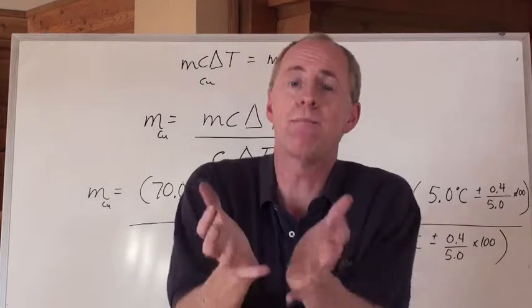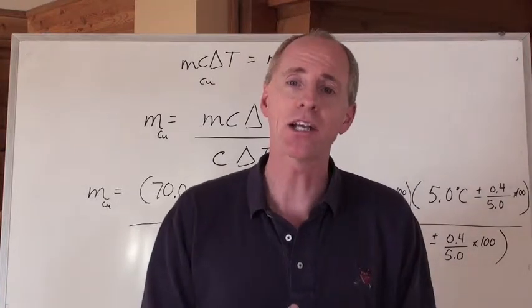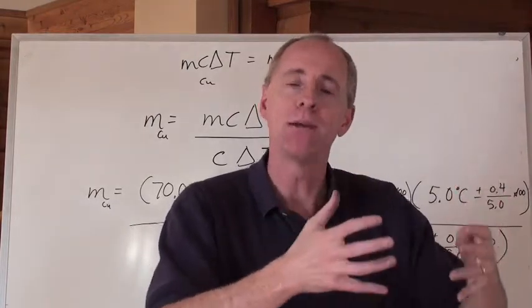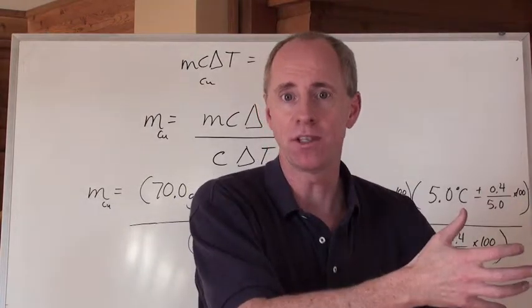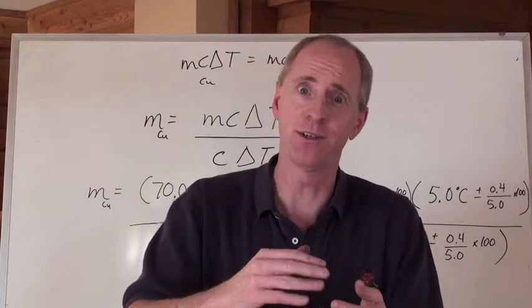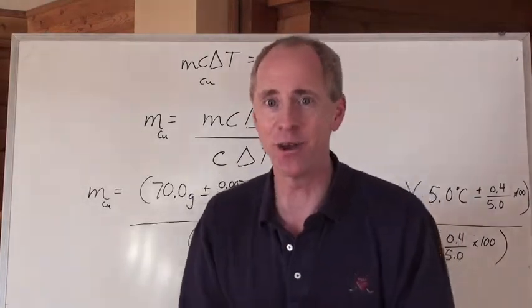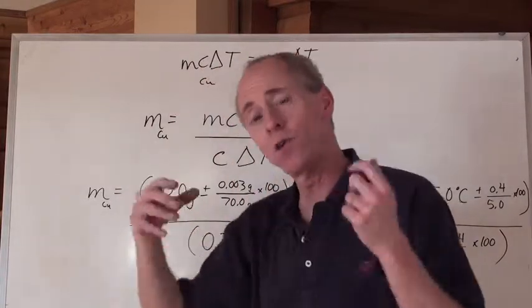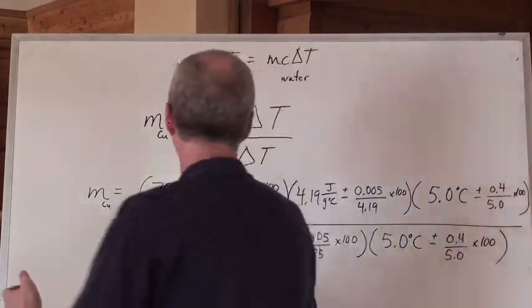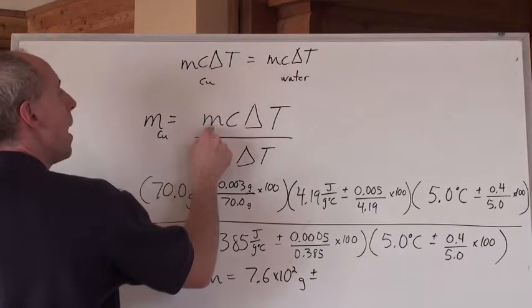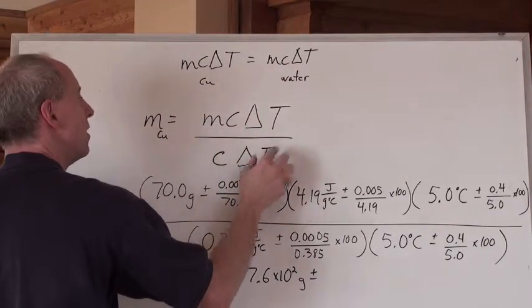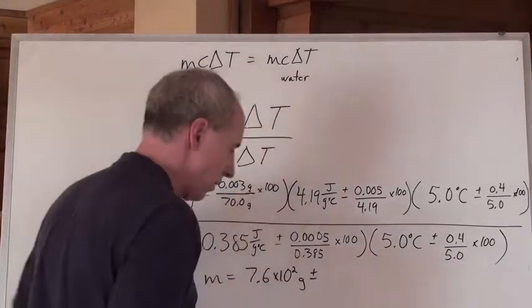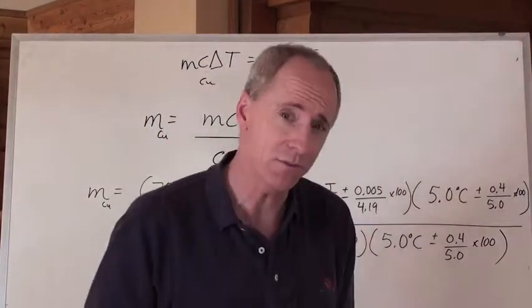Let's say we were looking for what mass of copper actually will be able to make the water change a certain amount of temperature, and this copper starts at this temperature and goes to the next one. Well we've done a question like that already, and the setup would be MC delta T equals MC delta T, and if we were isolating for the mass of the copper, mass of the copper equals MC delta T of the water divided by the C delta T of the copper. Now that's how we would arrange that formula.